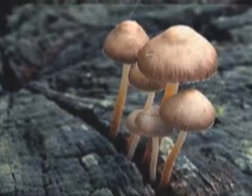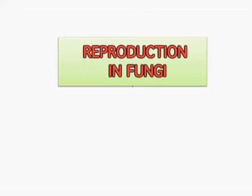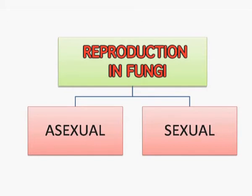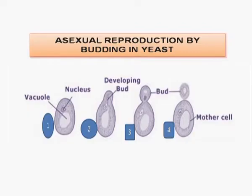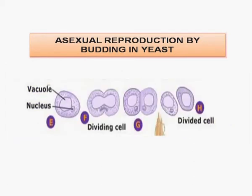Reproduction in fungi is both asexual and sexual. Asexual reproduction is by budding, fission, and spore formation. In budding, a bud appears, grows in size, a constriction appears, and it detaches itself from the mother cell leading an independent existence. In fission, a break appears in the body and the two separate from each other. Not all fungi are useful — there are harmful fungi as well that cause diseases.